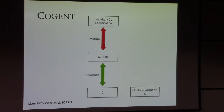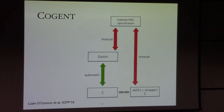The verification story is that we need to type these ADTs and write the code into Cogent, and link that with the Cogent-compiled C code. For the high-level functional correctness, the user's programs need to manually prove the refinement all the way from C to the Isabelle spec.